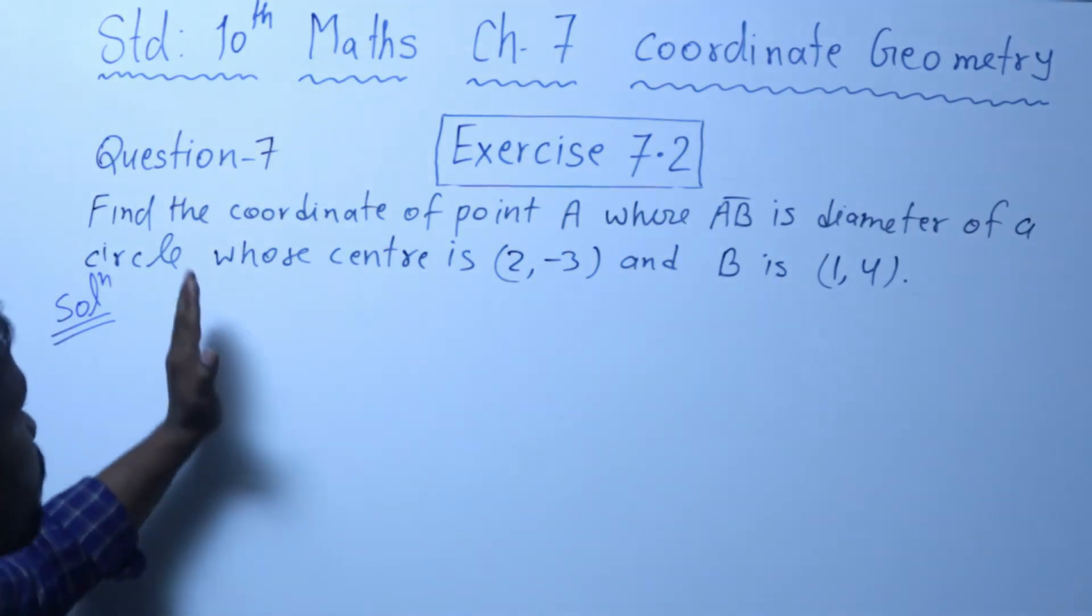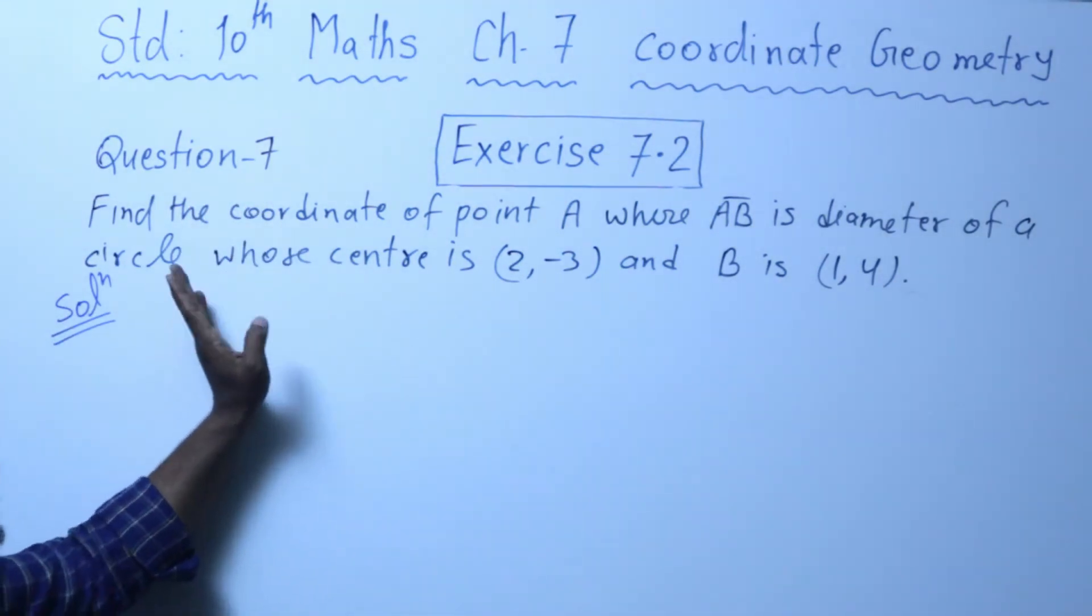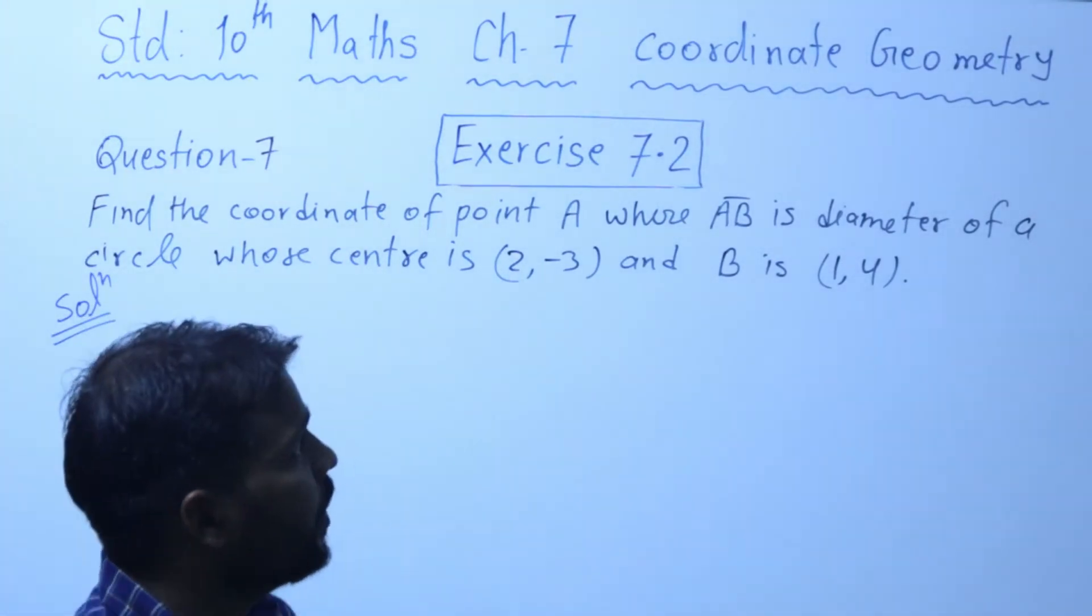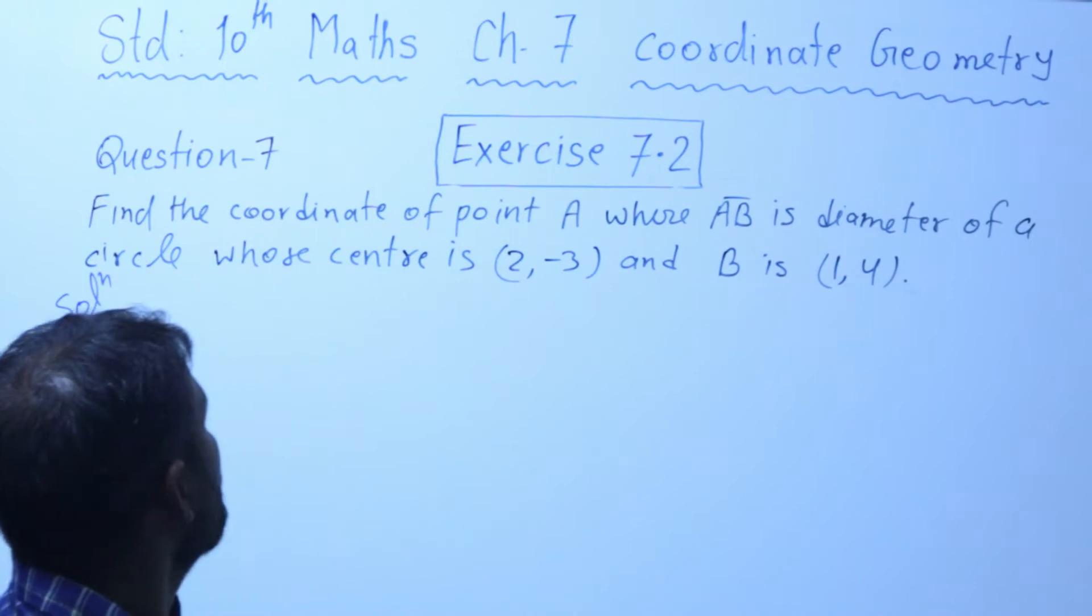So friends, let's look at question number 7. Find the coordinate of point A, where AB is diameter of a circle.